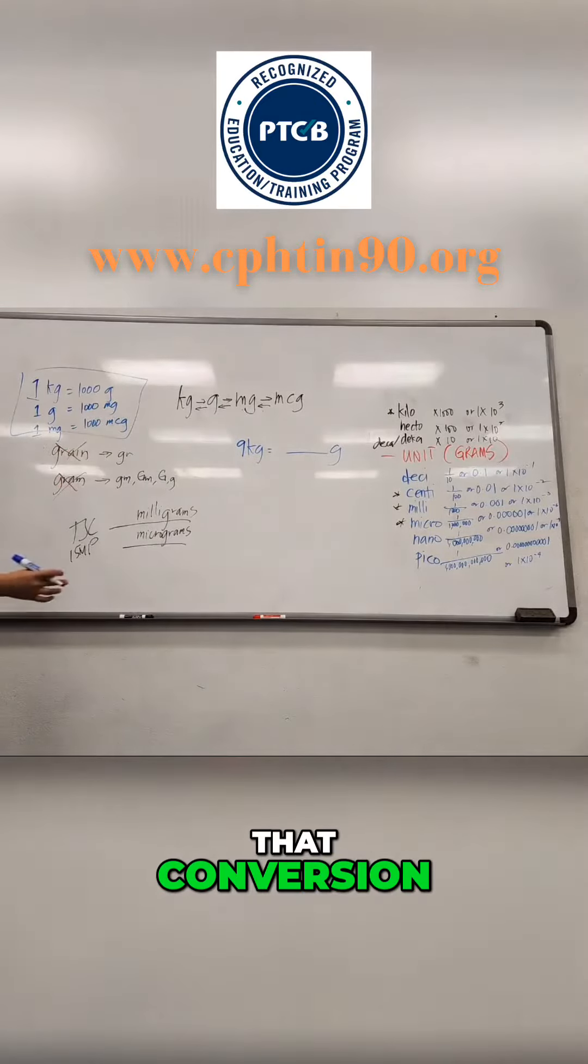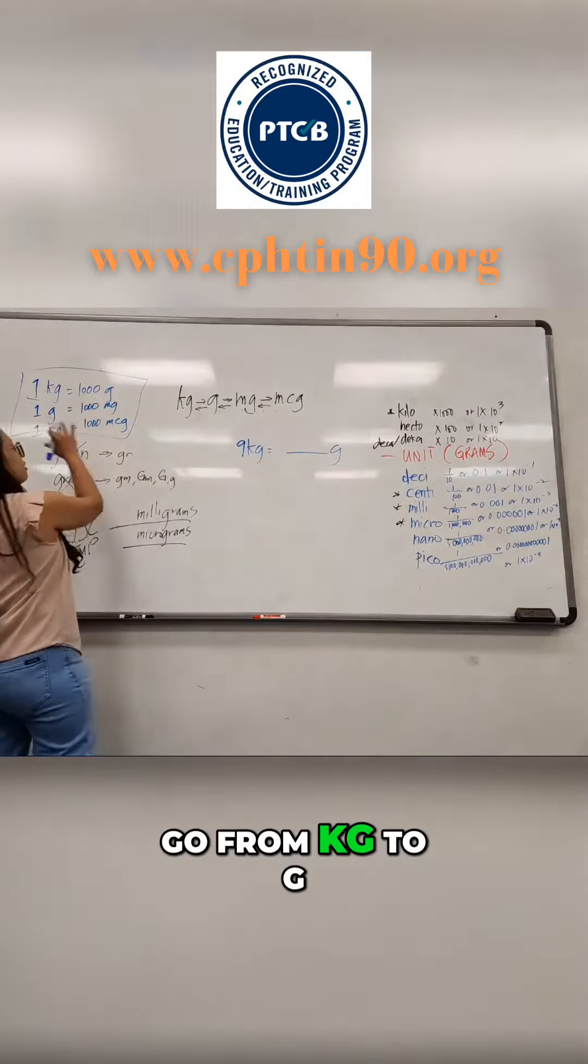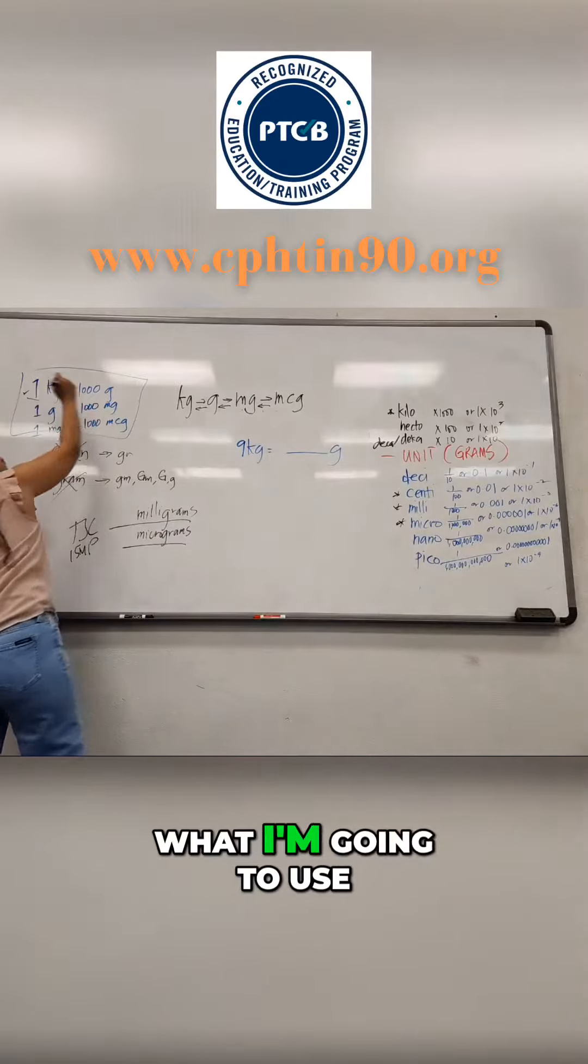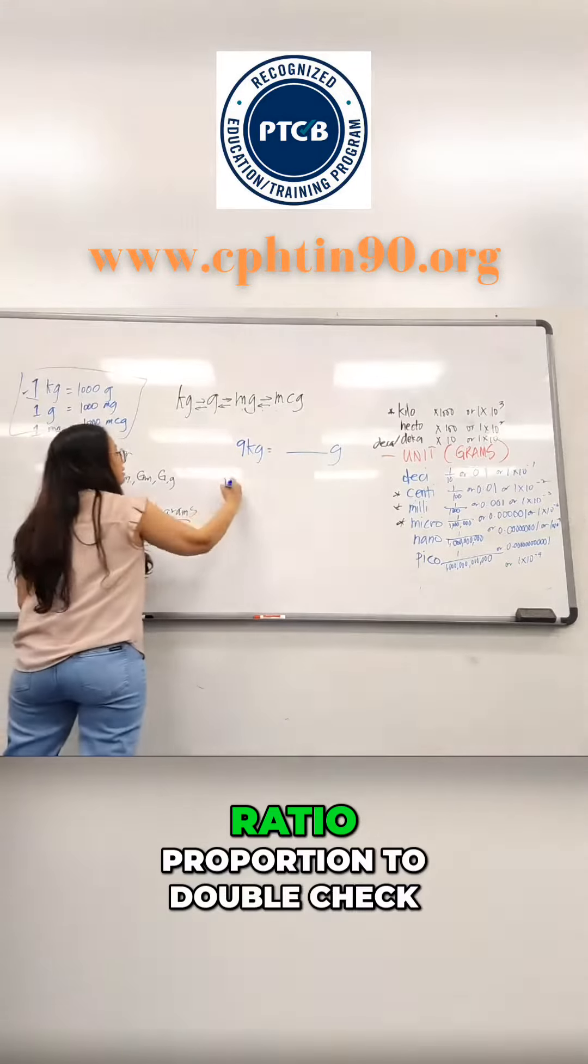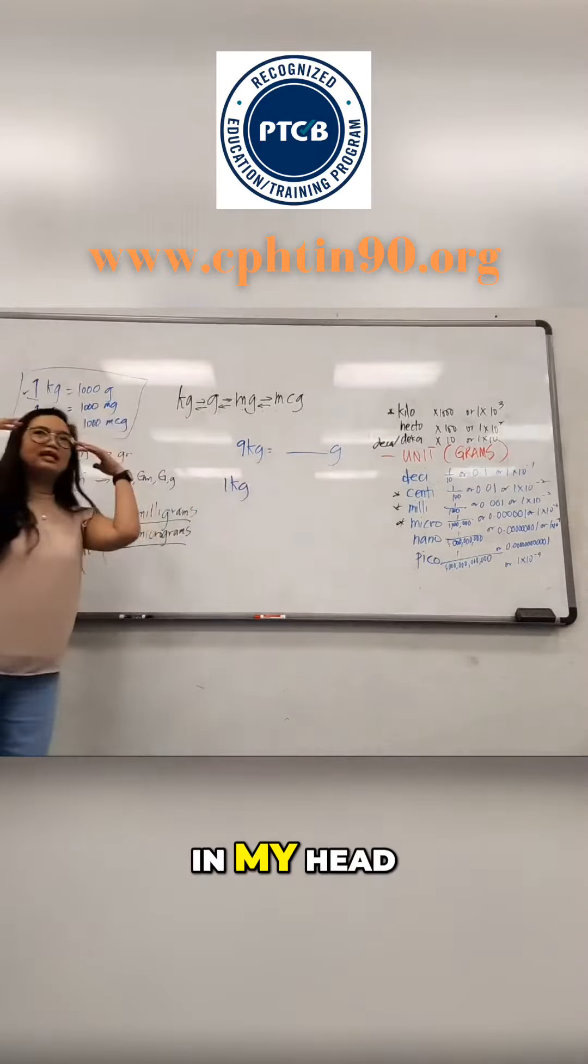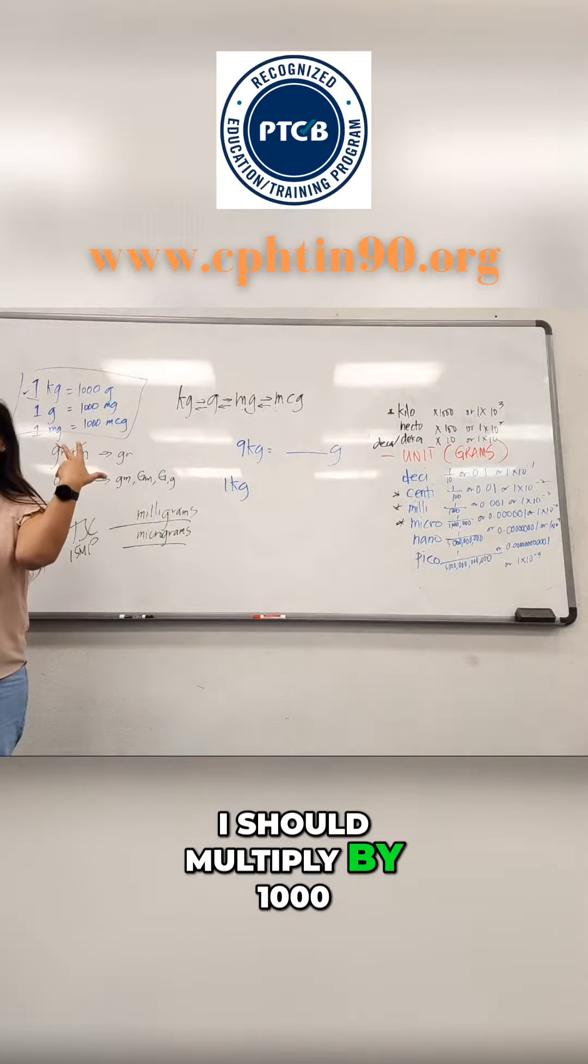Use this for that conversion. So I want to go from kilograms to grams, so this is what I'm going to use. Correct ratio in proportion. To double check in my head, I should multiply right by a thousand.